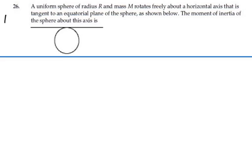Here's problem 1026. A uniform sphere of radius R and mass M rotates freely about a horizontal axis that is tangent to the equatorial plane of the sphere as shown below. The moment of inertia of the sphere about this axis is...